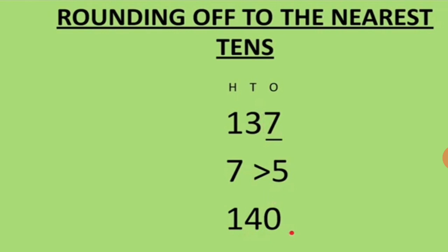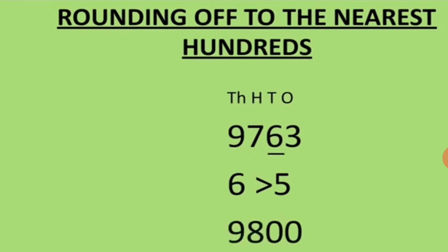Next, we round off to the nearest hundred. Here we have to round off to the nearest hundred. The number is 9763. At the hundreds place we have 7, so we will look at the number to the right of the hundreds place, which is 6.